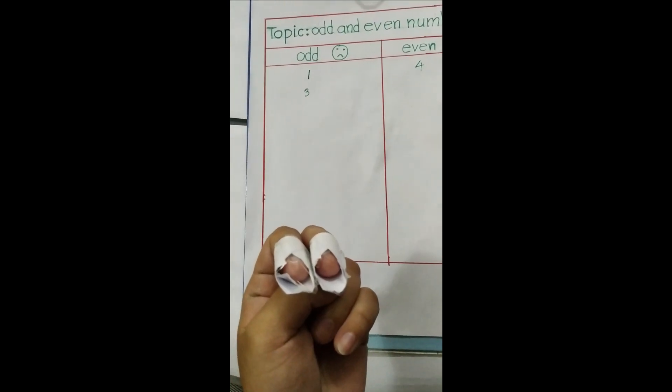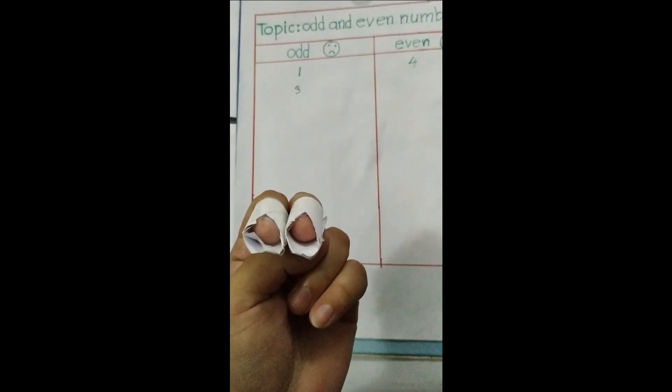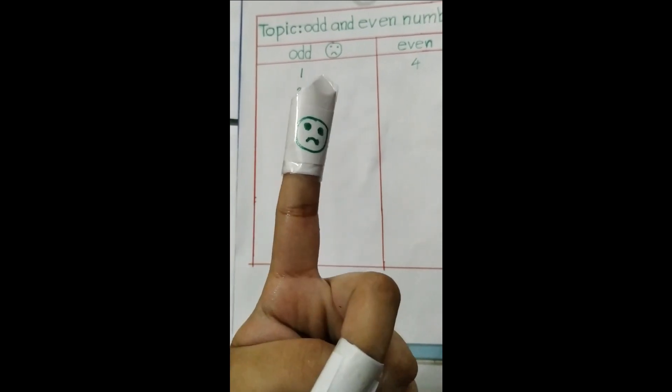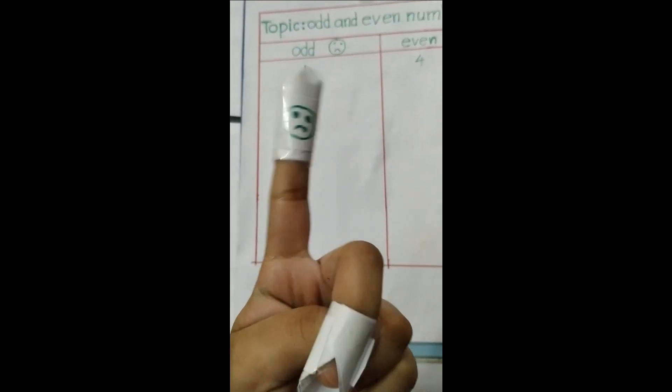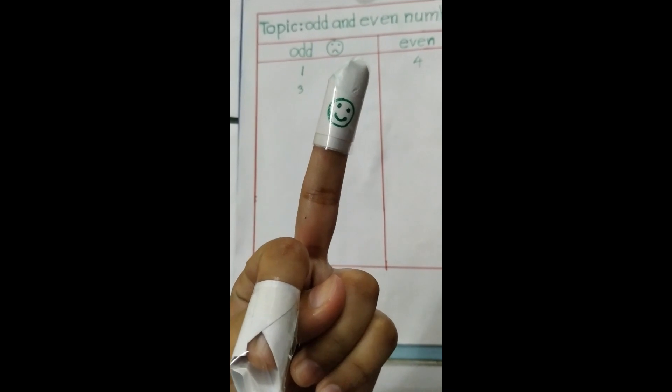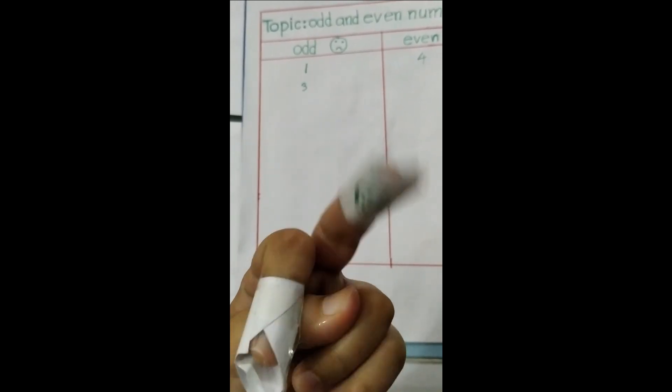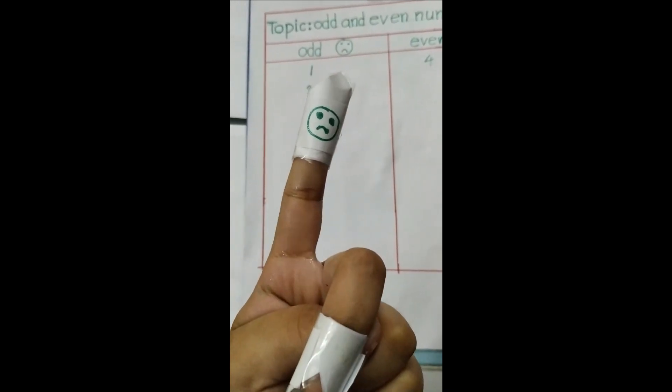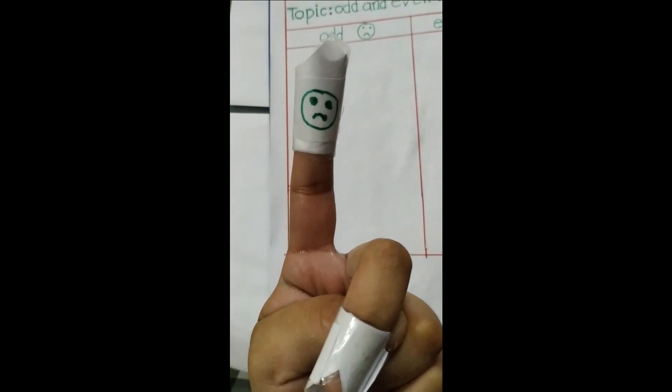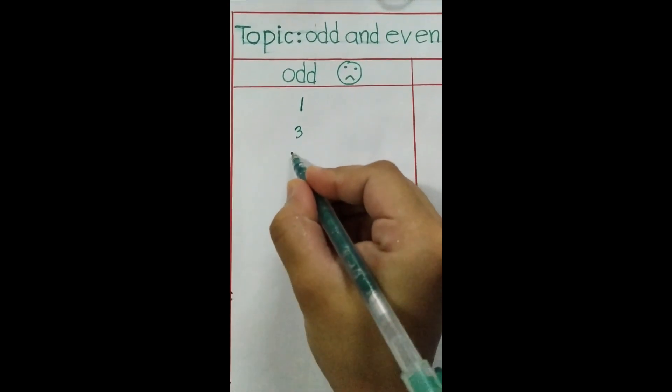If I want to write seven: one, two, three, four, five, six, seven. Seven has no friends, that means seven is odd. We can write here seven.